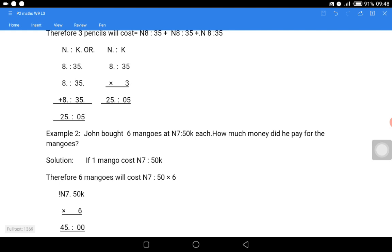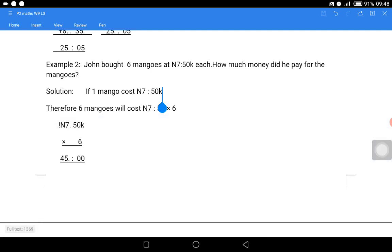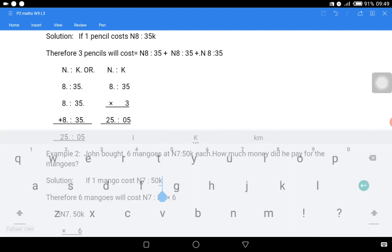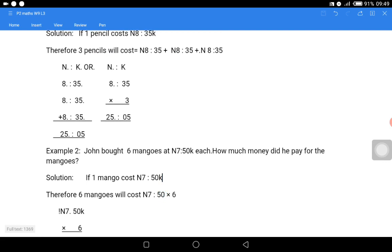Three times five is 15, write five and keep one. Three times three is nine, plus one gives us ten. Write zero and keep one. Three times eight under the naira column is 24, plus one that we are keeping gives us 25. So we have 25 naira and 5 kobo, and our answer for the three pencils is N25.05k.